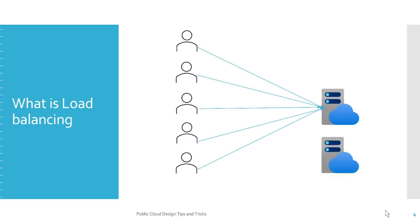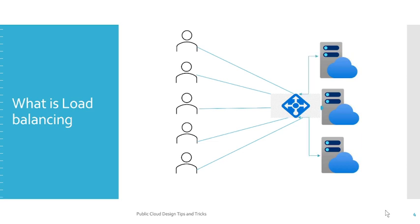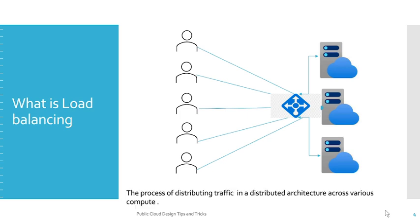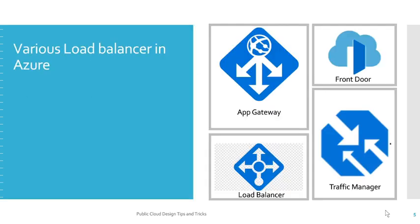In that case, what you can do is distribute the application across multiple servers. Now as you are distributing the application across multiple servers, the traffic should also be distributed across those servers — that's where the load balancer comes into picture. By the help of a load balancer you can distribute the traffic across multiple servers, and that is the basic concept of load balancing: the process of distributing traffic in a distributed architecture across various compute resources.